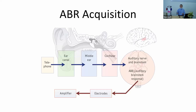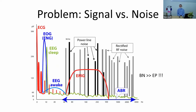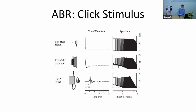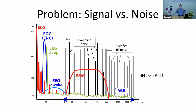The main problem with ABR recording is that the evoked response signal is very small in amplitude, while the noise is usually much larger. There are many sources of noise: mains supply or power line, radio frequency spectrum, and physiological noise from the patient — such as EMG or muscle activity.